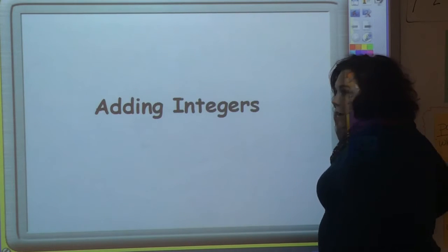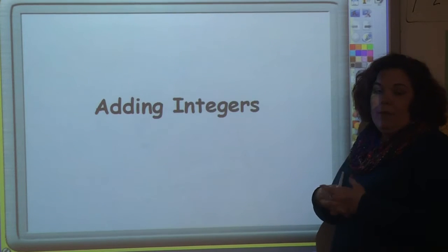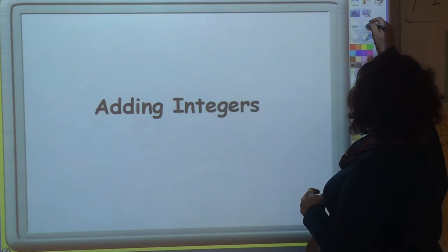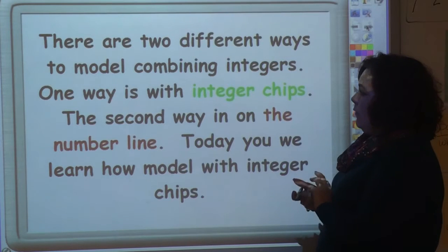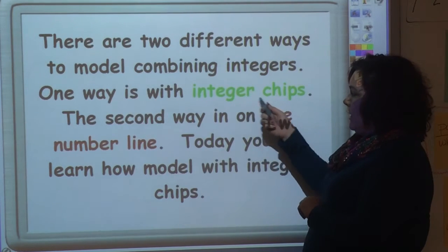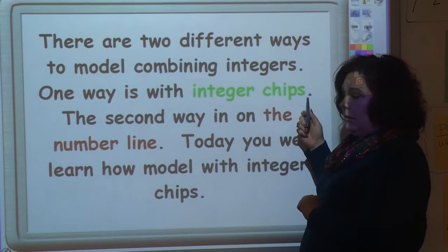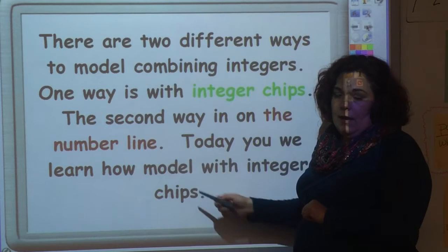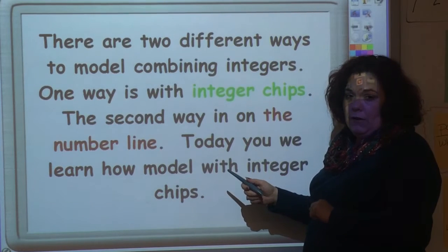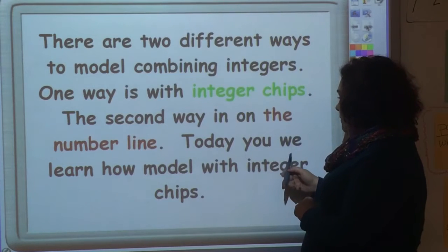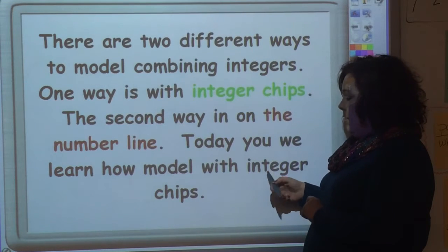This video is on adding integers and I'm primarily going to be using integer chips to demonstrate how this works. There are two different ways to model combining integers. One way is to use integer chips, which I'm going to do in this video. The second way is to use a number line, and I have some videos on YouTube that have to do with the number line. Today we will learn how to model with integer chips.